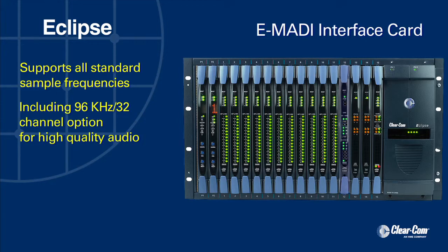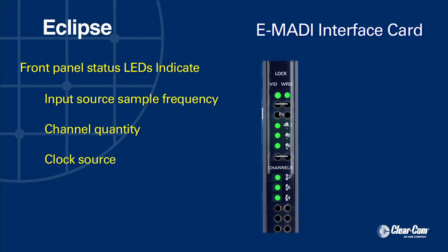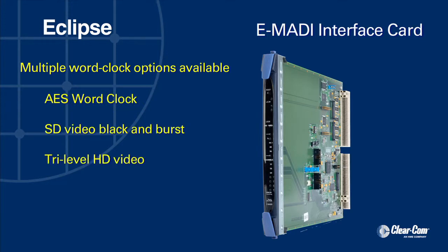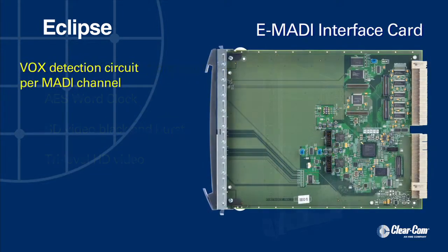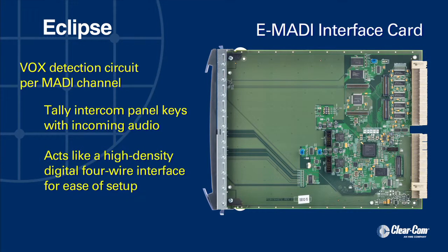All of the standard sample frequency options are available, including the 96 kHz 32-channel option for high-quality audio. Front panel status LEDs indicate sample frequency for the input source, channel quantity, clock source, and MATI audio active status. Multiple word clock options are available, allowing the E-MATI card to operate with any AES word clock, SD video black and burst, or tri-level HD video. Each MATI channel has a Vox detection circuit that can be used to tally intercom panel keys with incoming audio, acting like a high-density digital four-wire interface for ease of setup.